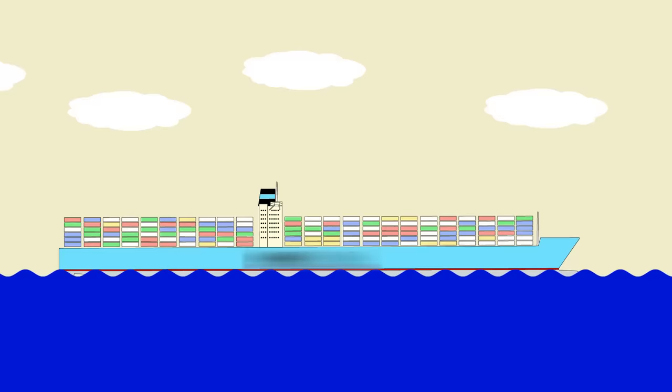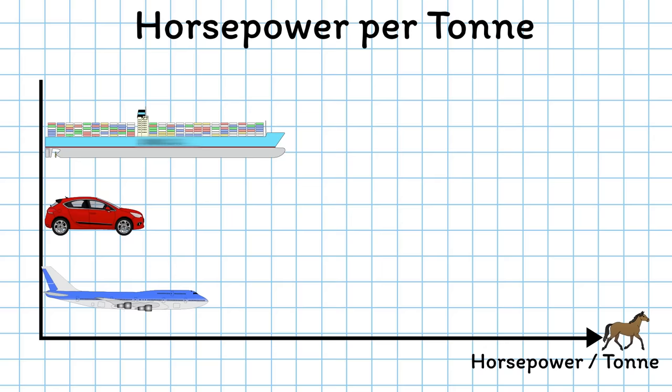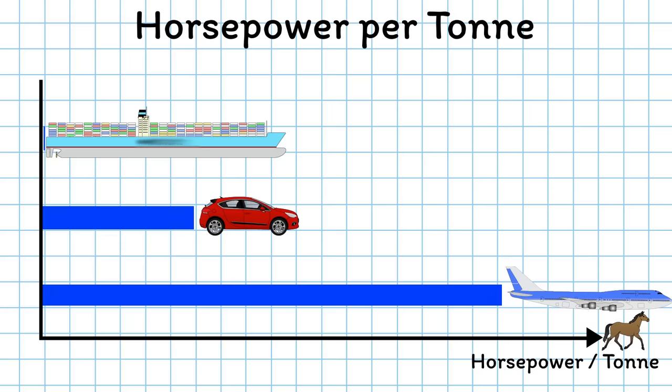The vehicles are now starting to settle in the correct order. The plane is still out ahead, the car in second, and the ship is trailing a long way behind. But for the ship, from here on it only gets worse.